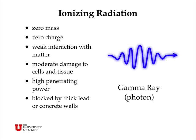Gamma rays will do moderate damage to cells and tissue, like beta rays. They have very high penetrating power, and it takes very thick lead sheets or even thicker concrete walls to block gamma rays and to protect you from that ionizing radiation.